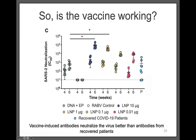We also developed a neutralization assay. Comparing DNA and rabies controls to four doses — 10, 1, and 0.01 micrograms LNP — and recovered COVID-19 patients, we see really high neutralization even at our lowest dose, which is higher than recovered COVID patients. The vaccine-induced antibodies are able to neutralize the virus better than antibodies from recovered patients.